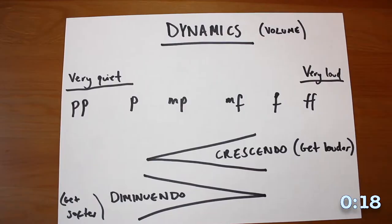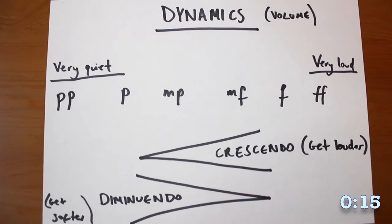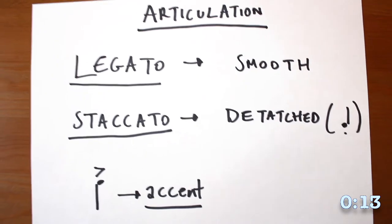When you get louder, it's crescendo. If it's quieter, then you get diminuendo. Smooth playing is legato. Detached is staccato.